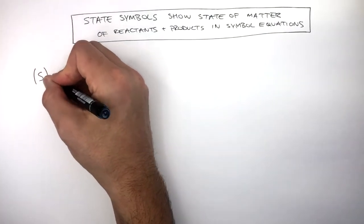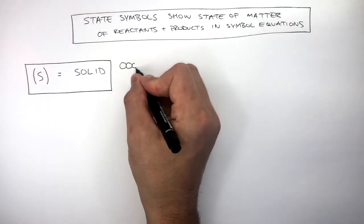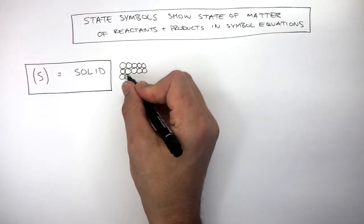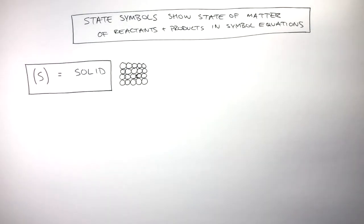An S in brackets means the substance is a solid. Any substance which is a solid at room temperature will have a particle diagram like this, where the particles are regularly arranged and close together. Therefore, to represent this in an equation, you write S in brackets. The S in brackets means it is a solid.